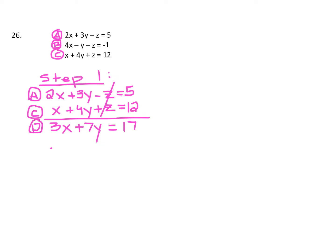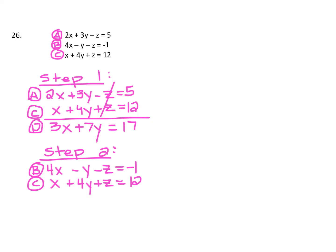Now step two. In step two, go back to those original equations and pick a different pair to line up. Looking at equation B and equation C, the Z's would cancel off again. I put a B with a circle around it — I circle it so it doesn't blend in with the variables. Combining like terms: 4X plus 1X is 5X, negative 1Y plus 4Y is positive 3Y, the Z's cancel again, and negative 1 plus 12 is positive 11. So we have a new equation, which I'll label equation E.